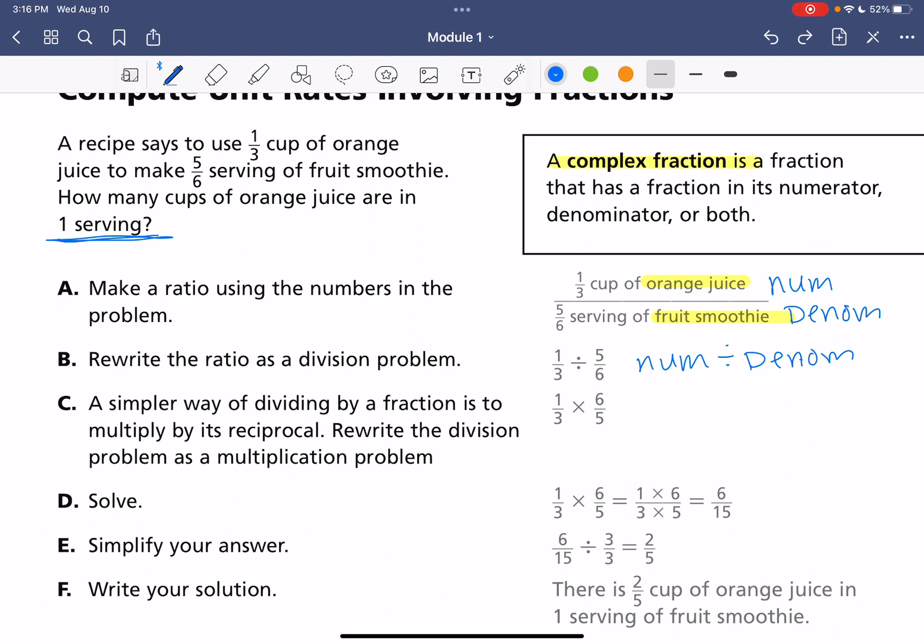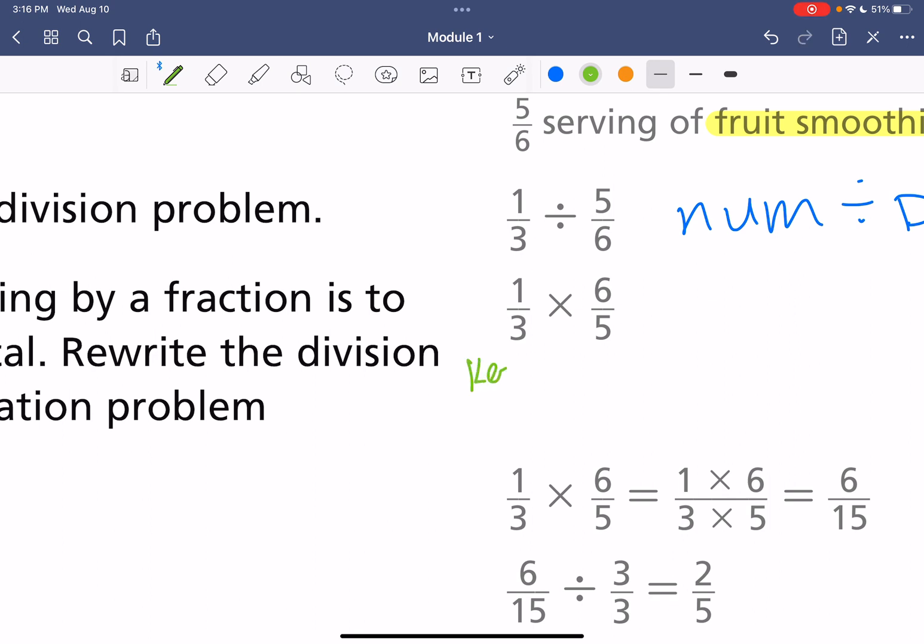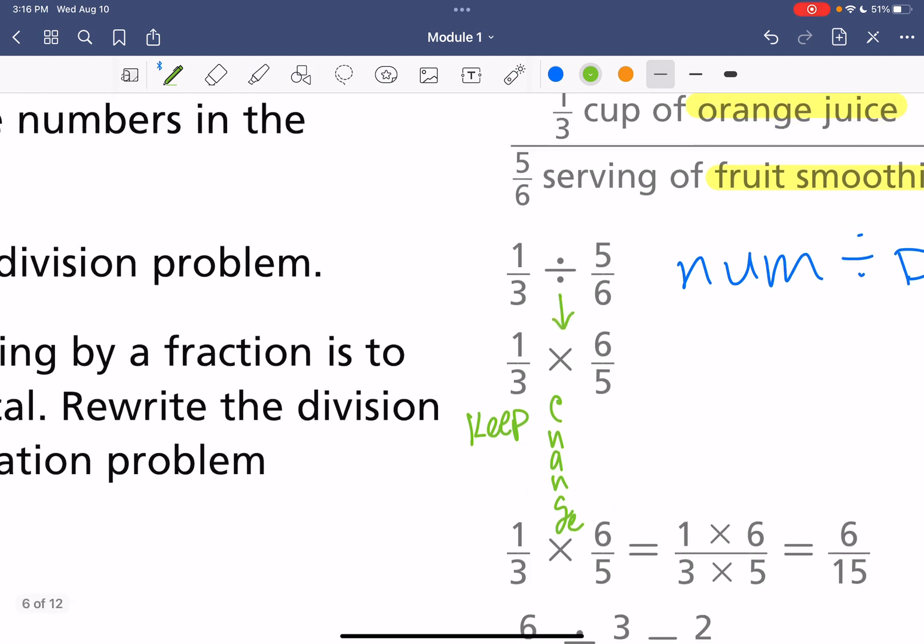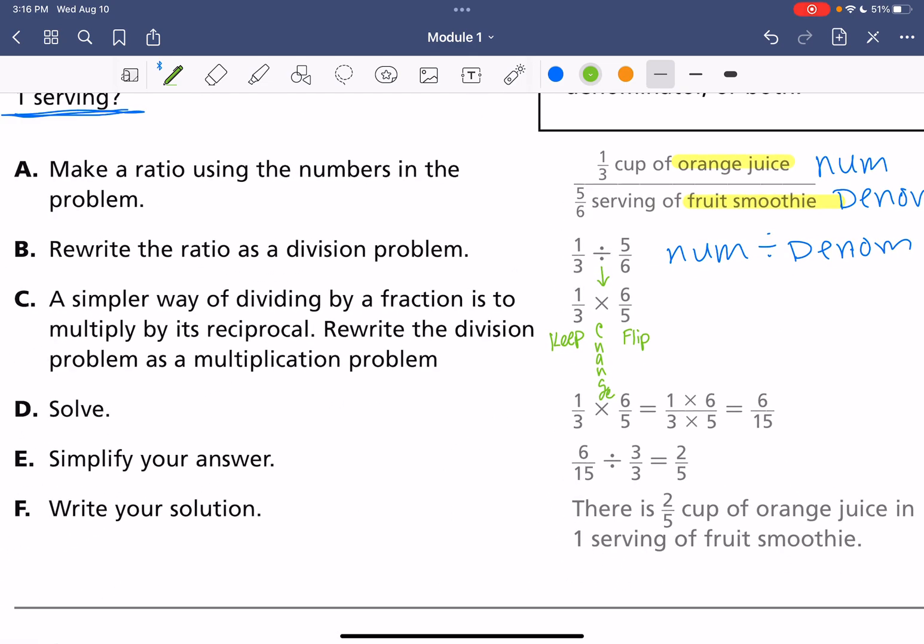And then we are going to do our keep, change, flip, or whichever device you use to remember dividing fractions. For me, I always do, we keep the first, and then we change the second. So we went from division to multiplication. And then we flip our second fraction. So what that is, is multiplying by its reciprocal. So multiplying by the reciprocal of that second number. So the only one we touch is that second fraction.